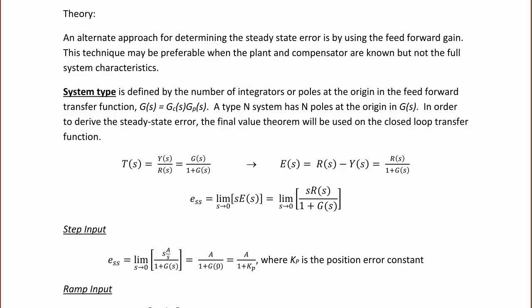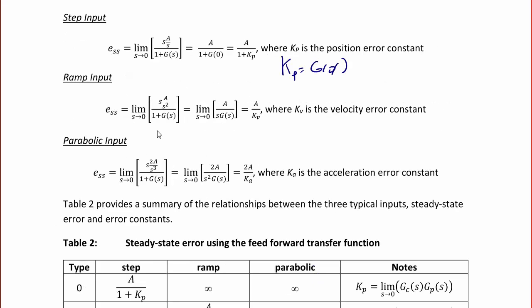Replacing S with 0, this is A over 1 plus G(0), where KP is the position error constant and KP equals G(0). For the ramp input, the steady-state error is the limit as S approaches 0 of S·A over S² over 1 plus G(S).